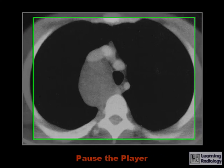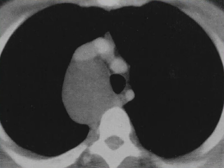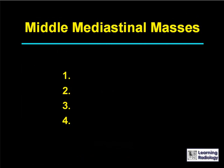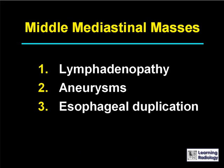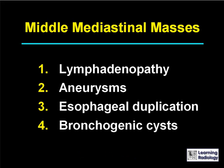Here's your first differential. The differential is for middle mediastinal masses. There are four causes. The four causes of the middle mediastinal mass are lymphadenopathy, aneurysms, esophageal duplication, and bronchogenic cysts.